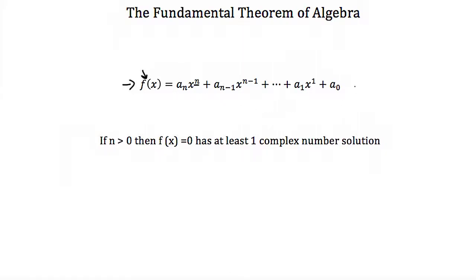This isn't really a big deal. Complex numbers — yes, they can be imaginary, so we could say 3i, or they can be a combination of real and imaginary, like 2 plus 3i. But numbers like 3, negative 2, 1, and 0 — these may be whole or natural numbers or real numbers, but they're also considered complex numbers. So if any of these were a solution, then n would be greater than 0.